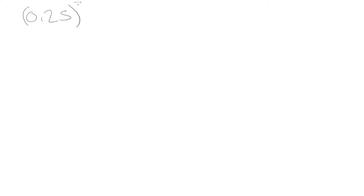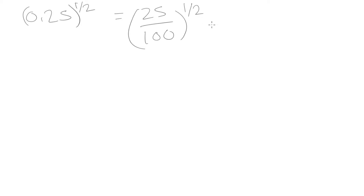Let's go over a few examples of rational exponents. Say we're given the expression 0.25 to the power of 1 half. The first thing we want to do is convert this into fraction form to make it easier to deal with. We can write it as 25 over 100 raised to the power of 1 half, and simplify by dividing both by 25 to get 1 quarter — since 25 times 4 equals 100. So this is 1 over 4 to the power of 1 half.